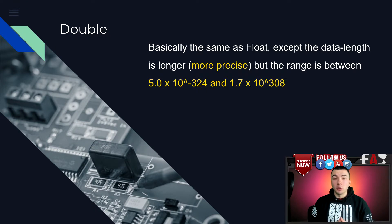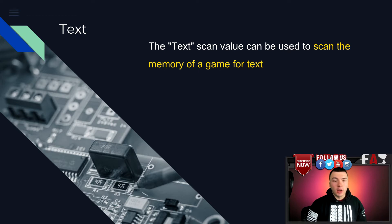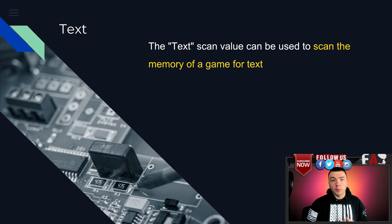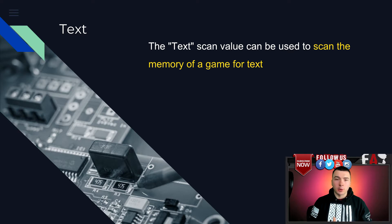Double is also a decimal type value. Moving on, we have text. If you have basic knowledge of programming, most text in games or applications is stored in a string — a continuous sequence of bytes. For instance, a character's name is most likely stored in a string. So you can switch your data type to text and search for your name in the game. This is particularly useful because most values involving your character are stored by your name in memory, so you can use this as an easy way to find ammo, health, whatever.